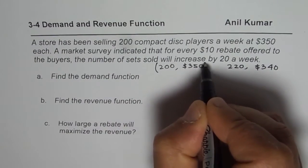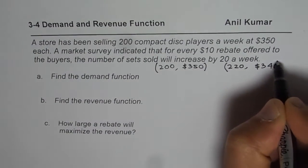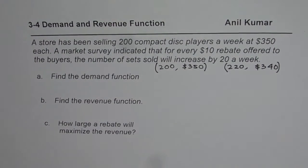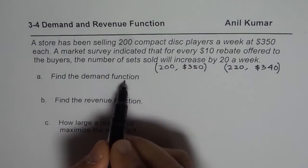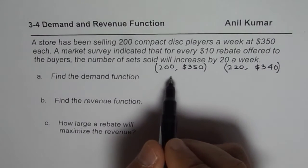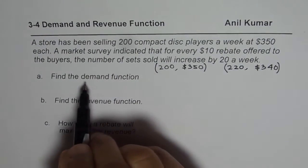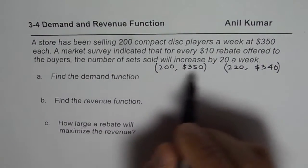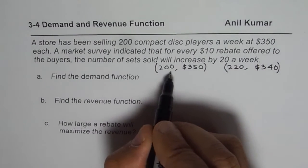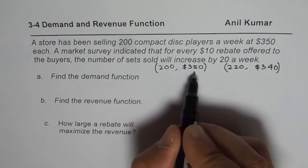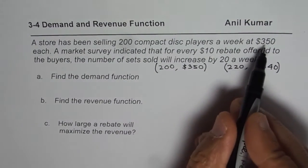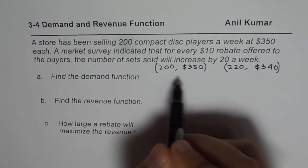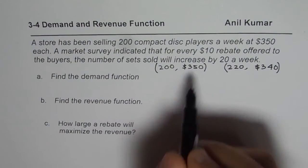This is a linear function, so we can use the y = mx + b equation to find the demand function. We'll find the rate at which items are being sold as related to the cost function. The demand function is basically the cost at which items can be sold, and we normally write it as p(x), where x is the number of items.